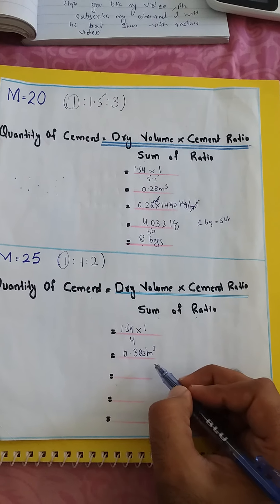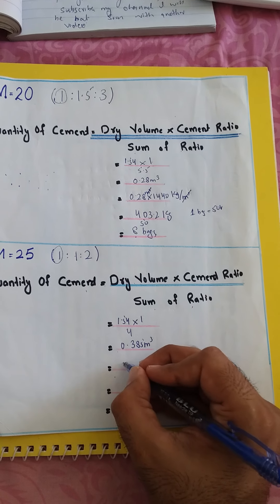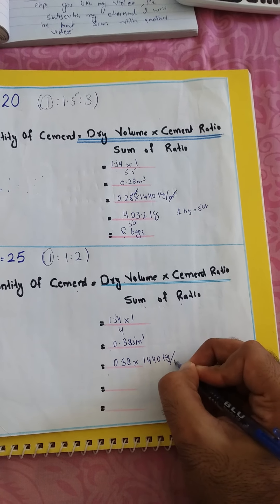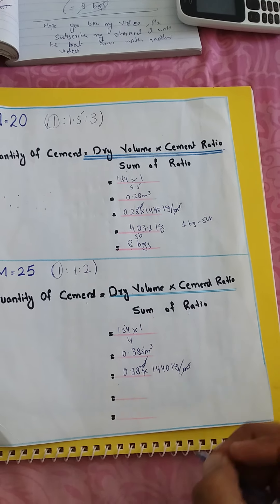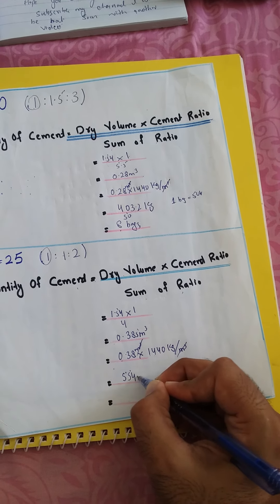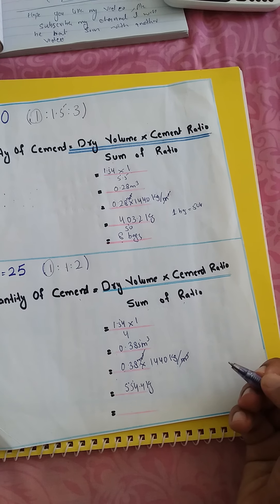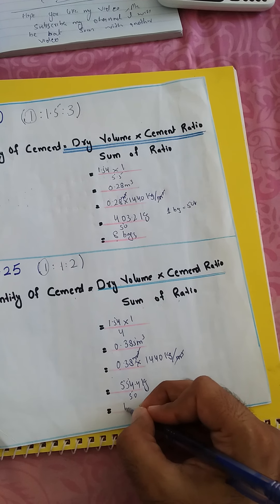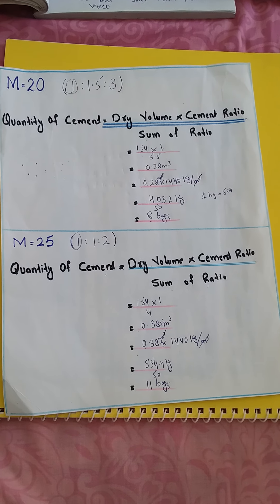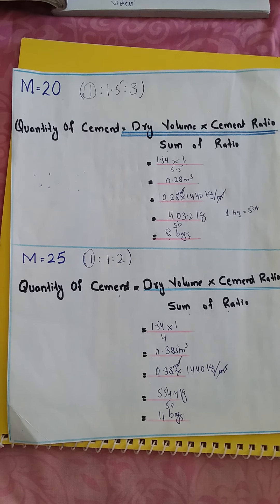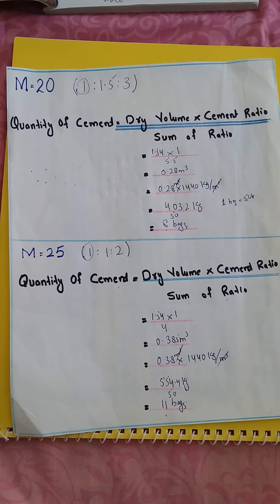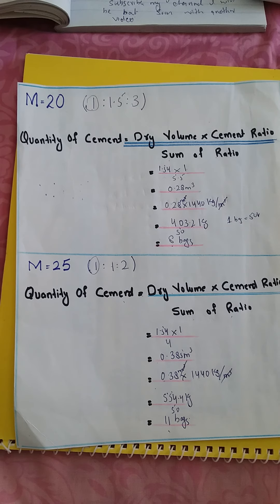Multiplying by 1 and dividing by 4, we get 0.385 cubic meters. We multiply by the density of cement, 1440 kg per cubic meter. Cubic meter cancels, and 0.385 multiplied by 1440 gives us 554.4 kg. Dividing by 50 kg per bag, we get 11 bags. For grade M25 and 1 cubic meter of concrete, we need 11 bags of cement. Hope you liked the video — please subscribe, and I'll be back soon with another video. Thank you.